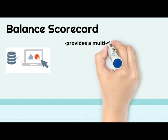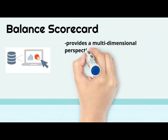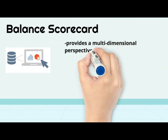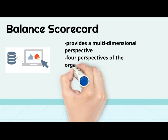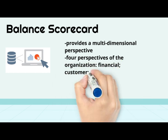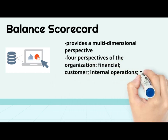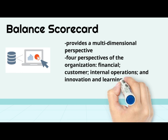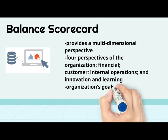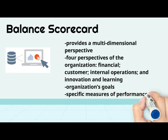The Balance Scorecard is a report that provides a multi-dimensional perspective on organizational performance. It contains measures relating to four perspectives of the organization: financial, customer, internal operations, and innovation and learning. It shows the organization's goals for each of the four dimensions, as well as specific measures of performance in attaining those goals.